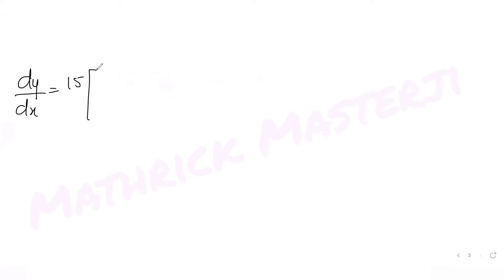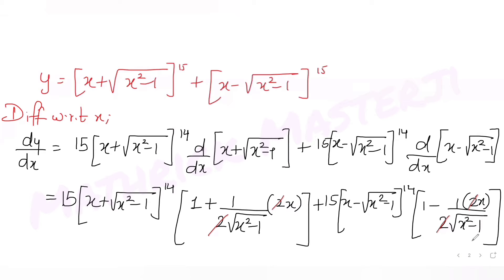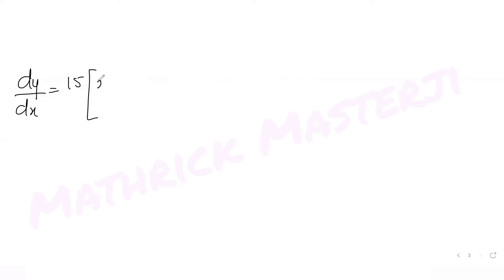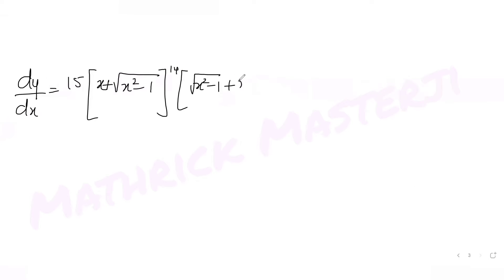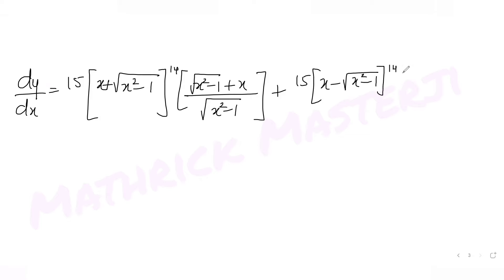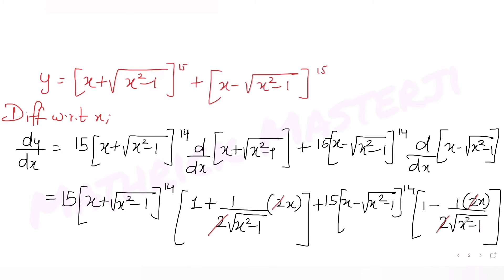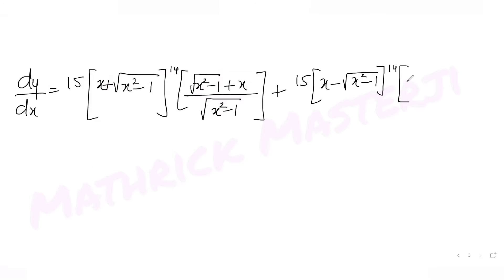dy/dx = 15·(x + √(x²-1))^14 · [(√(x²-1) + x)/√(x²-1)] + 15·(x - √(x²-1))^14 · [(√(x²-1) - x)/√(x²-1)], after cross-multiplying and simplifying each bracket.